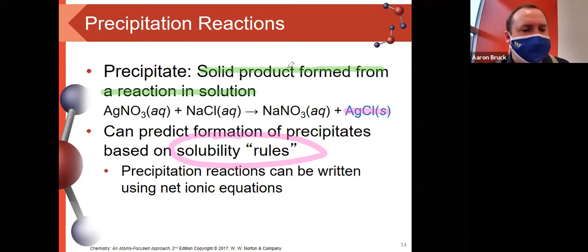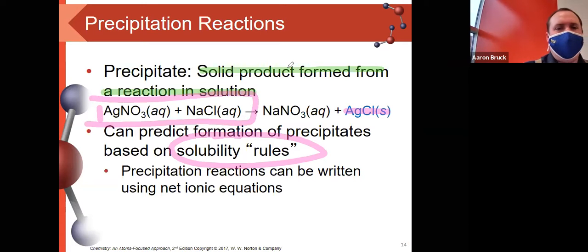Now, these precipitation reactions can be written using net ionic equations. But the general idea is that by the time I get to the end of this, I'm going to have a reason why this formed and evidence to show that a chemical reaction, a chemical change, did take place molecularly, not just based on our observations.